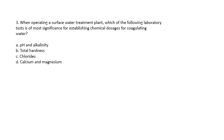Question 3: When operating a surface water treatment plant, which of the following laboratory tests is most significant for establishing chemical dosages for coagulating water? pH and alkalinity, total hardness, chlorides, or calcium and magnesium. The answer is pH and alkalinity.